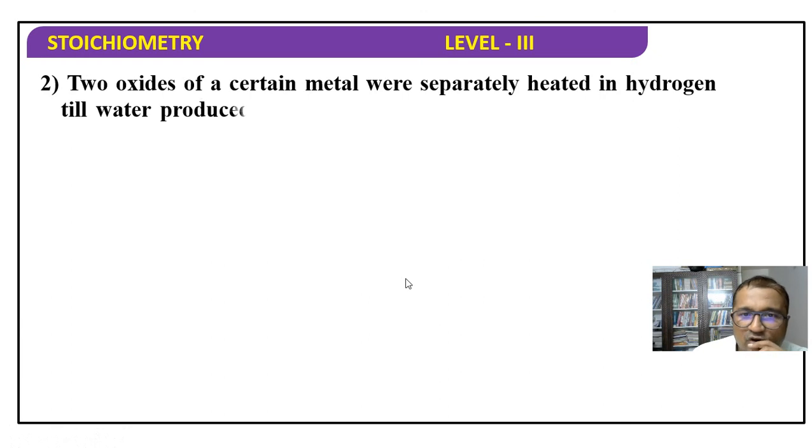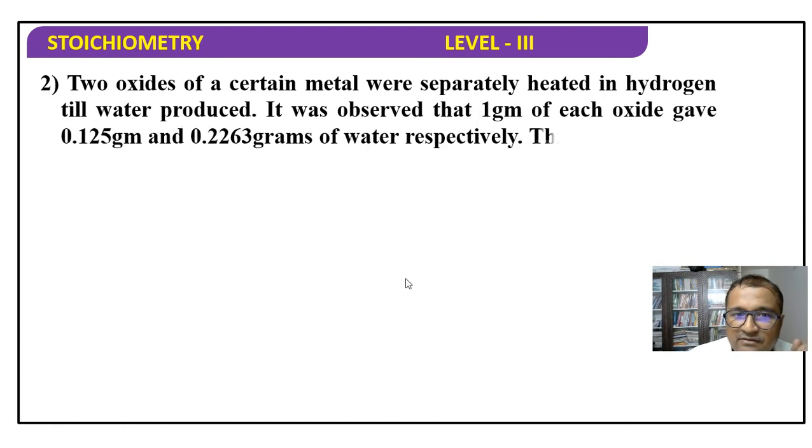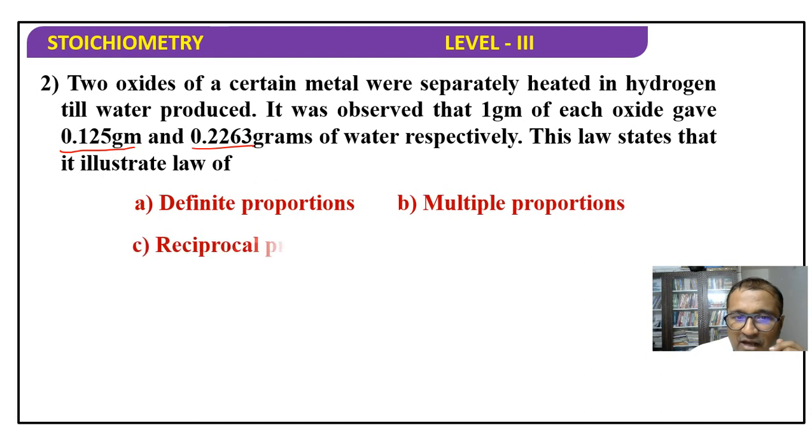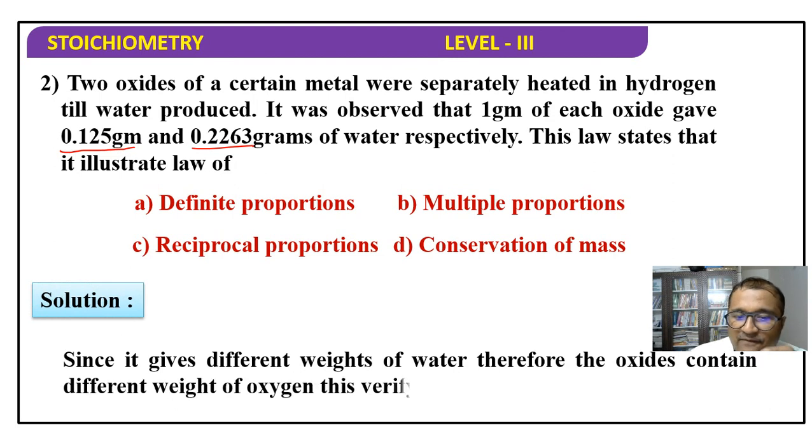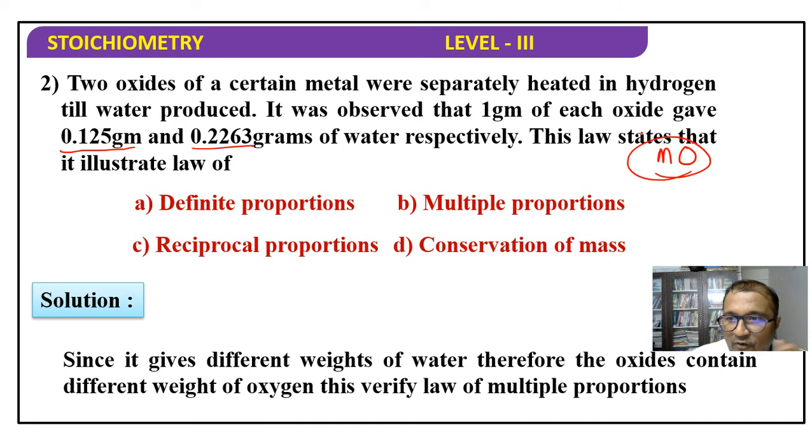Now the second question: two oxides of a certain metal were separately heated in hydrogen till water is produced. It was observed that 1 gram of each oxide gave 0.125 grams and 0.2263 grams of water respectively. This law states that it illustrates law of - here different weights of oxygen are given, which means this verifies the law of multiple proportions.